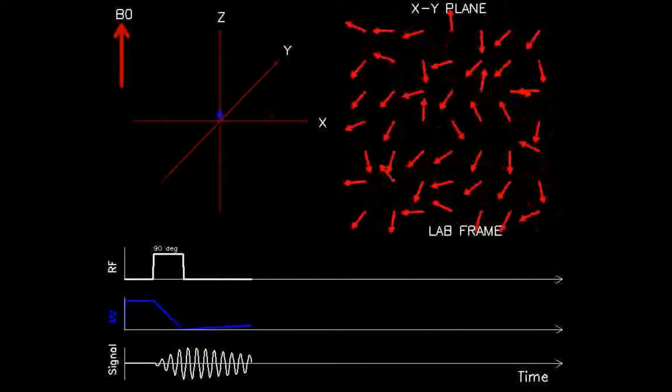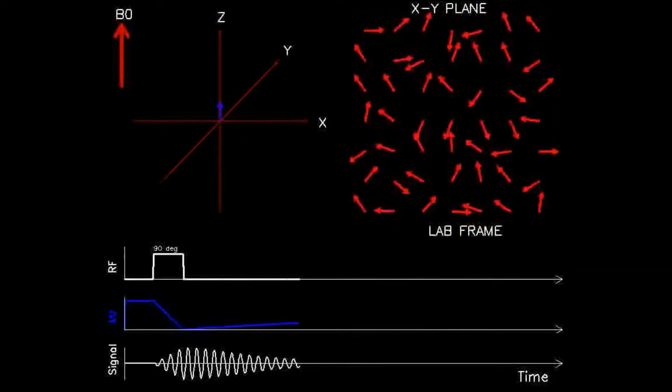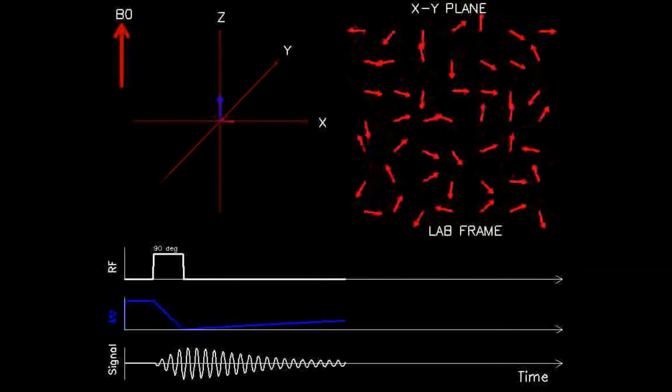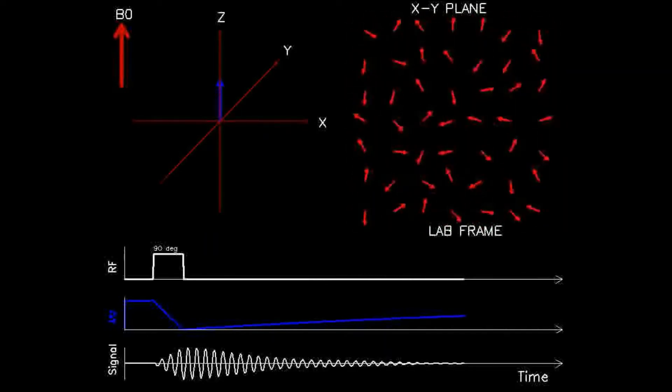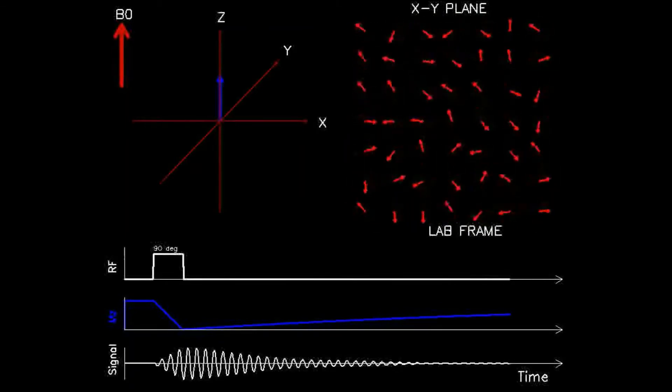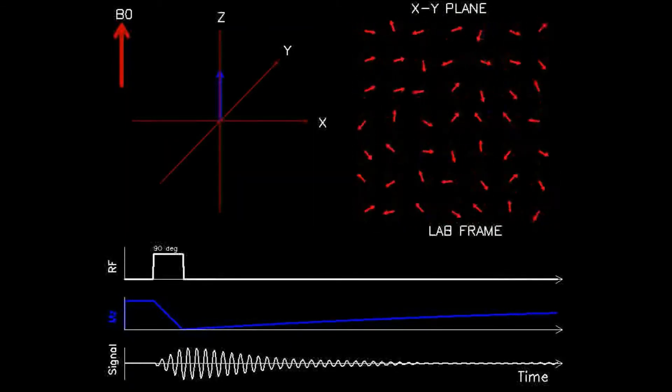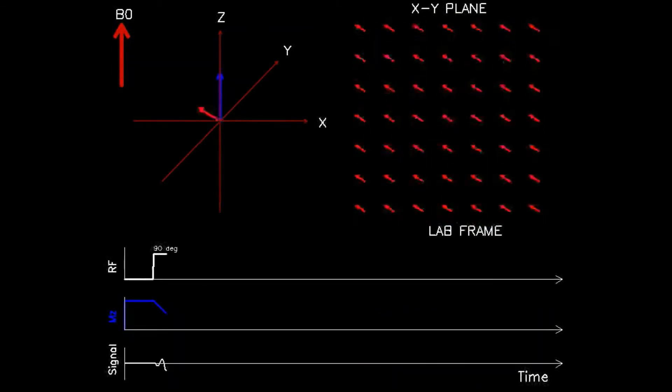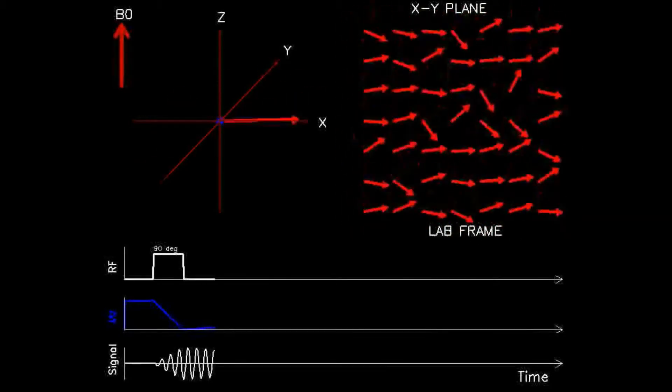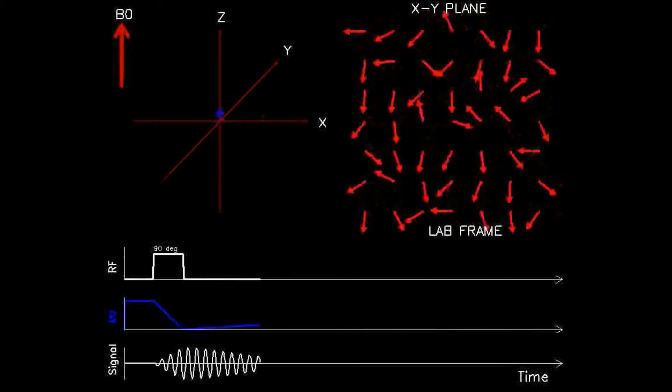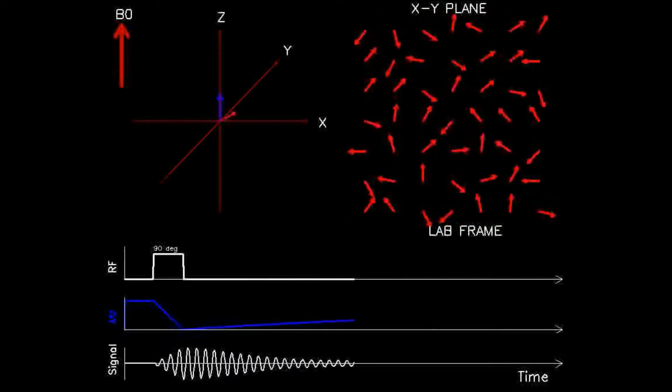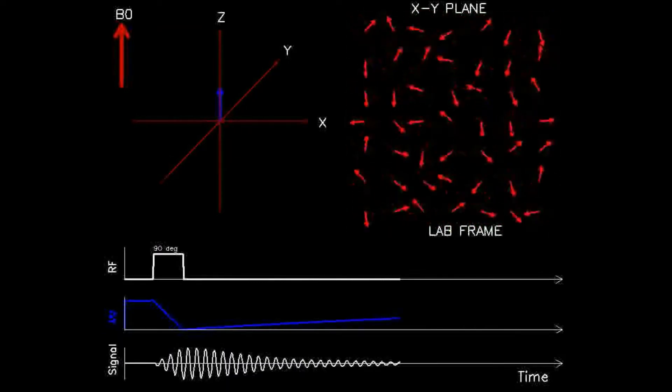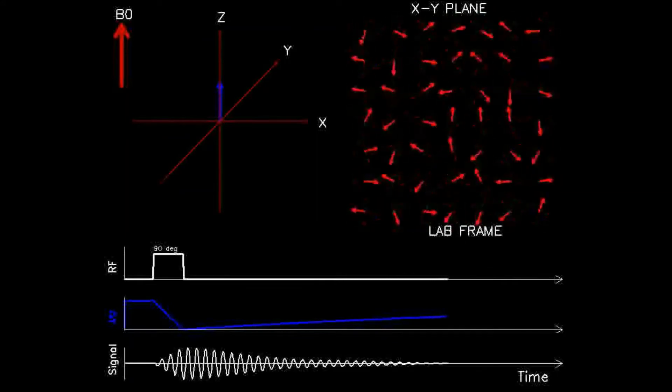It is important to understand that the blue arrow, whose decay represents T1 relaxation, would not be able to fully recover its original magnitude until all of the individual red arrows have decayed completely. It also stands to reason that the summation vector of all the individual rotating red arrows, represented by the rotating arrow in the left upper panel, would decay faster than each individual red arrow on the right. This is a surrogate for the T2 decay.